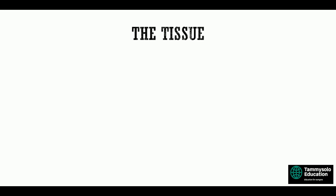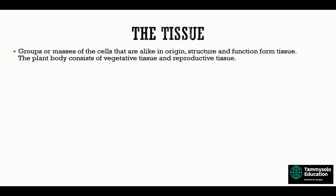Welcome to our new lecture series. This is Crop Anatomy Lecture 8. In this lecture series we'll be looking at tissue. Remember in the previous lecture we looked at the types of tissues. A tissue is a group or mass of cells that are alike in origin, structure, and function. The plant body is characterized into two main parts: vegetative tissues and reproductive tissues.